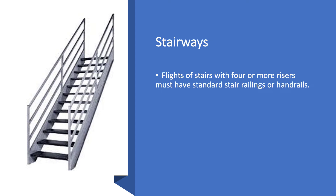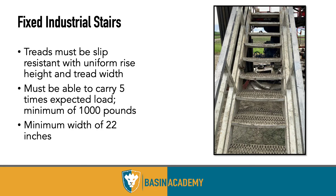For stairways: a flight of stairs with four or more risers must have handrails — four risers corresponds roughly to four feet of elevation on a standard rise. Fixed industrial stairs must have slip-resistant treads with uniform rise height and tread width, must support five times the expected load with a minimum of 1,000 pounds, and have a minimum width of 22 inches. Worn or damaged stairs like the one shown here — with a visible crack — do not meet the standard.